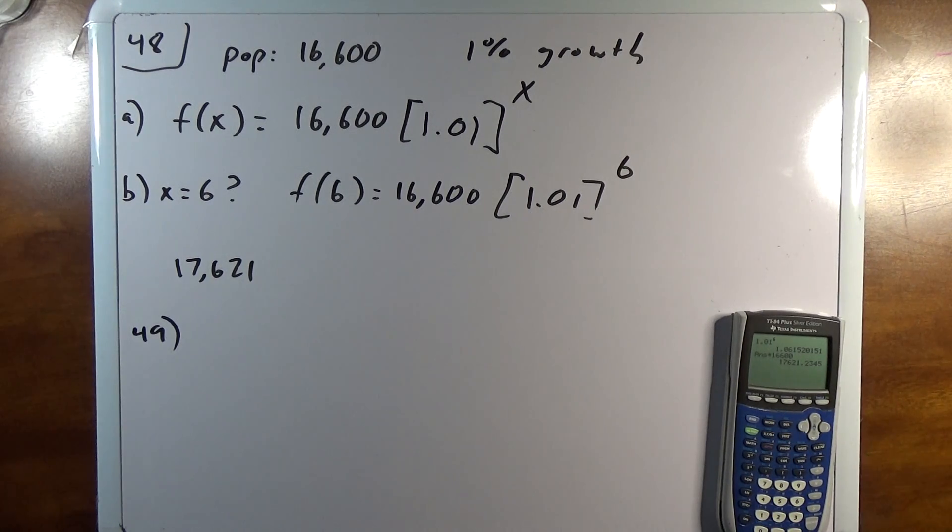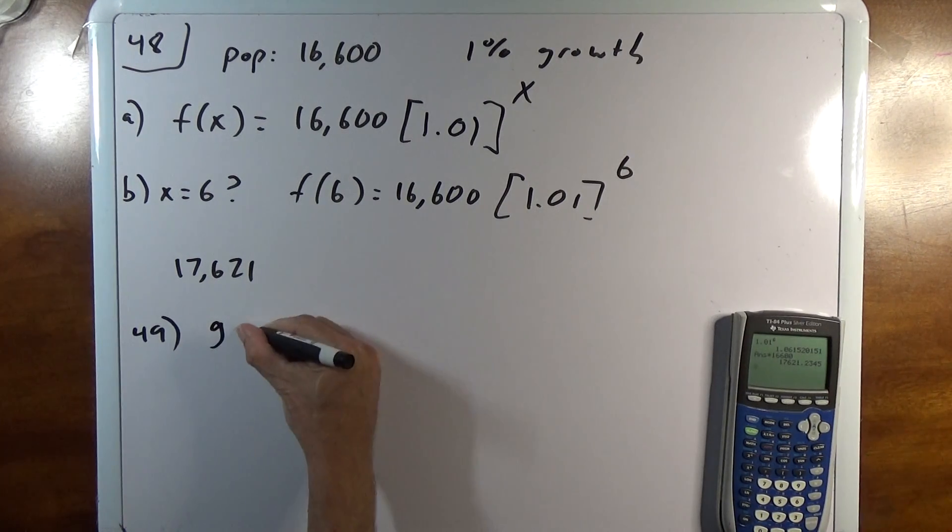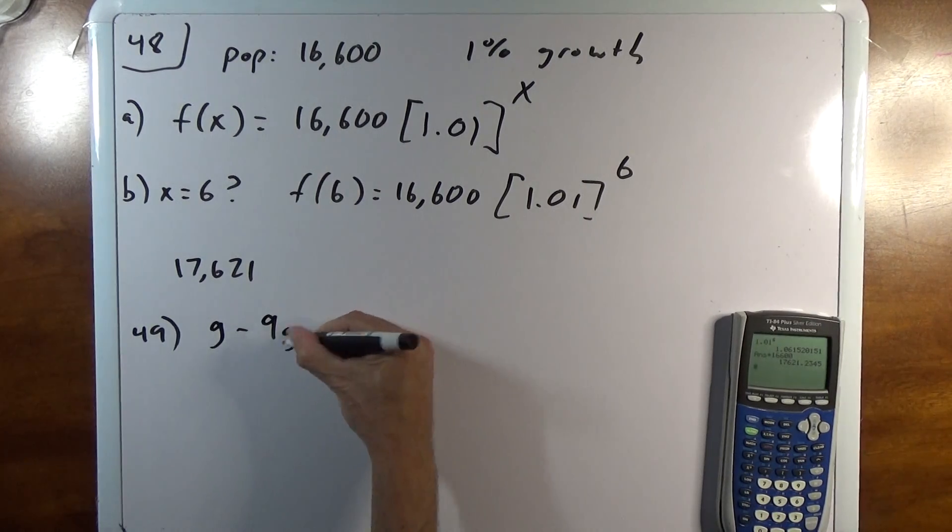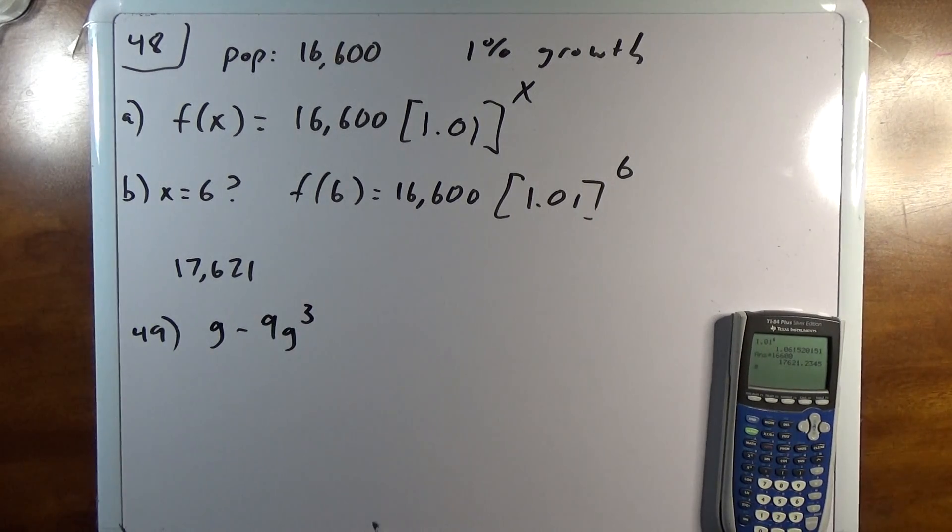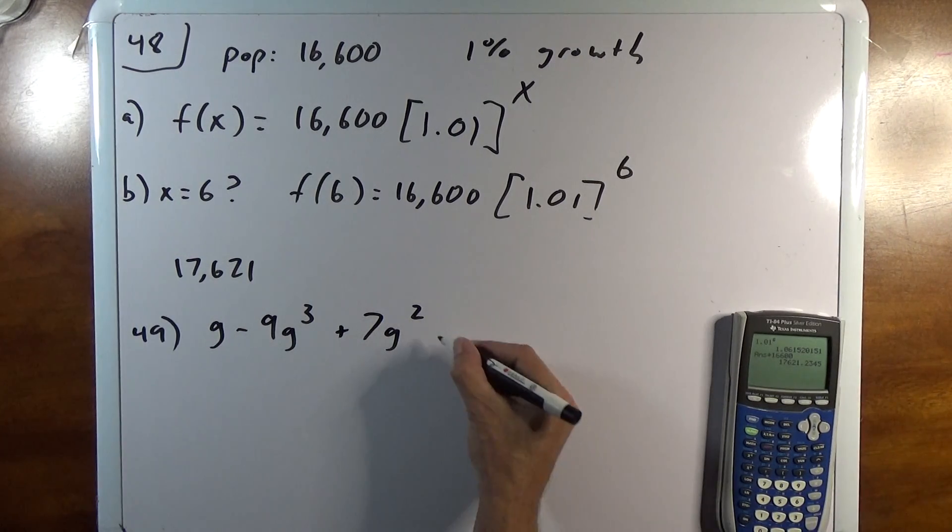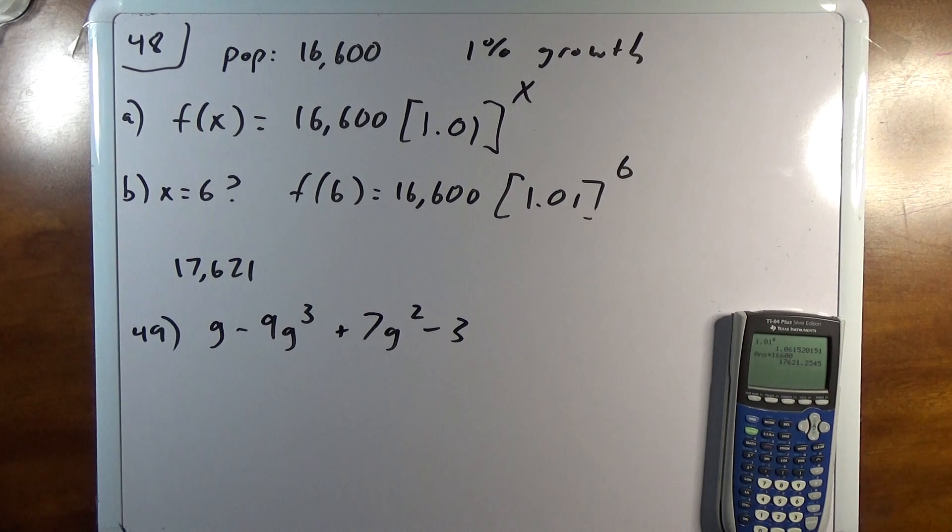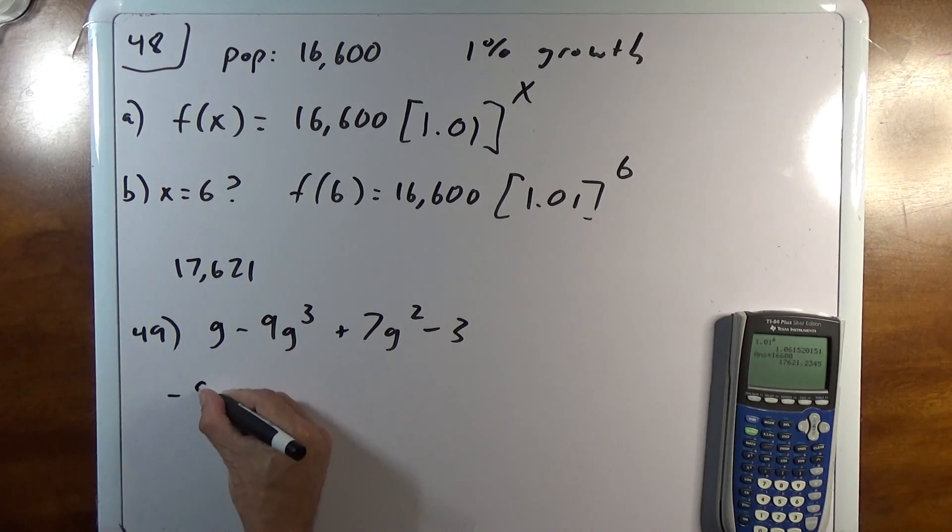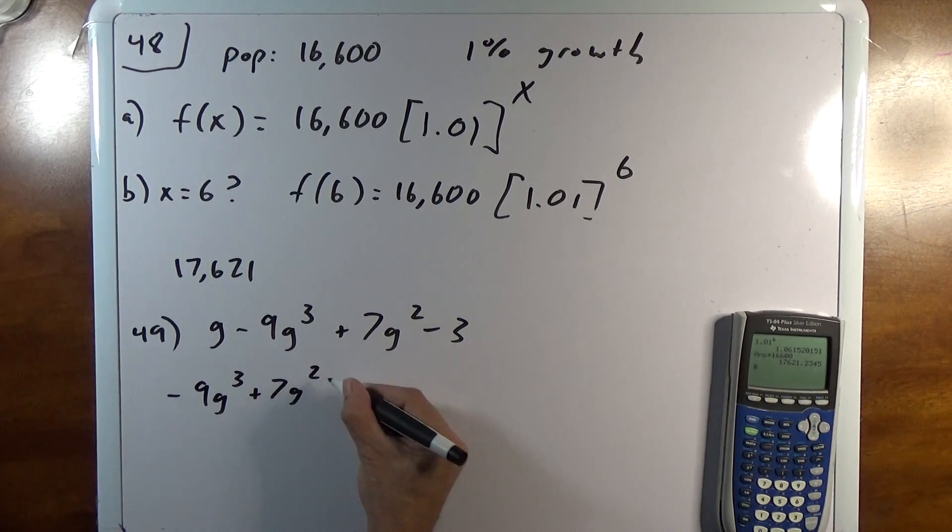It says write the polynomial in standard form. G minus 9G cubed plus 7G squared minus 3. So standard form is descending order. I can't combine any of these because I have a linear, a cubic, a quadratic, and a constant. So I'll say negative 9G cubed plus 7G squared plus G minus 3.